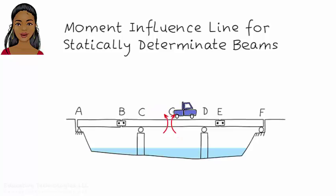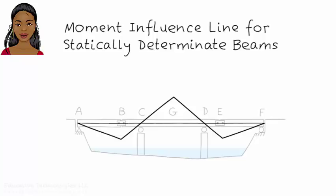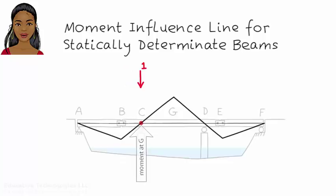We can answer the question by drawing what is called the moment influence line. Here is the moment influence line for point G. The diagram shows bending moment values at G as the unit load moves across the bridge. When the unit load is at A, bending moment at G is zero. When the unit load reaches point B, moment at G becomes a large negative value. When the unit load is at C, moment at G becomes zero again.